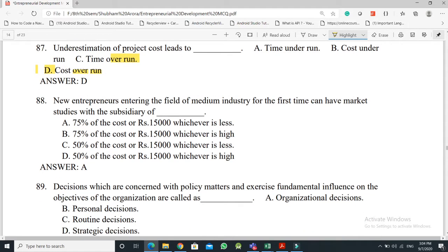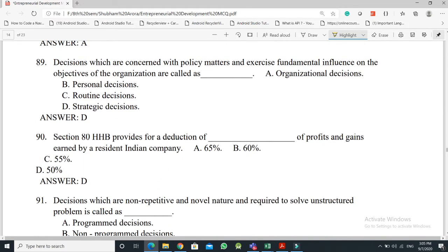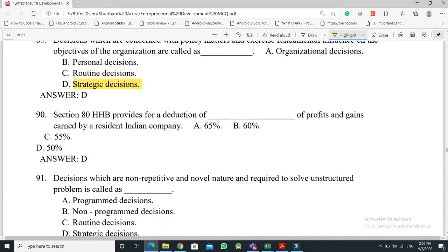Question No. 88: New entrepreneurs entering the field of a medium industry for the first time can have market studies with the subsidy of - the answer is Option A, 75% of the cost or Rs. 15,000 whichever is less. Question No. 89: Decisions which are concerned with the policy matters and exercise fundamental influence on the objectives of the organization are called - the answer is Option D, Strategic Decisions.